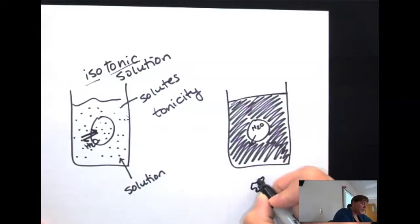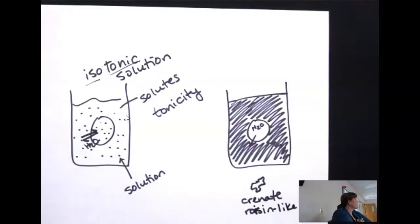It gets crenate, raisin-like, candied. When we actually cut into a corn syrup soaked egg, it almost looks candied because some of the sugar molecules might pass through, but I think most of it is all those formed elements or electrolytes inside of the cytoplasm are just so condensed that it looks like it is corn syrup itself.